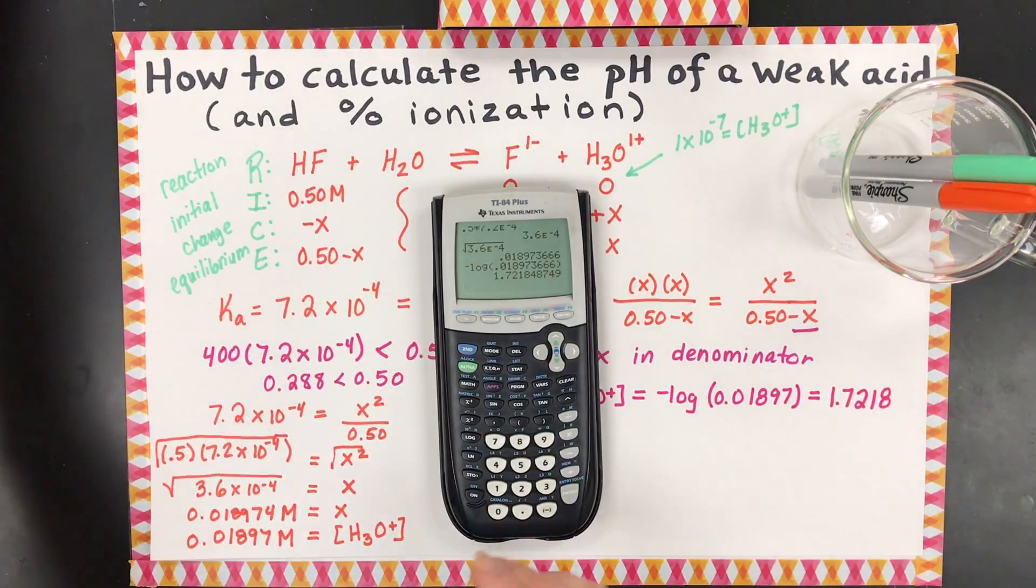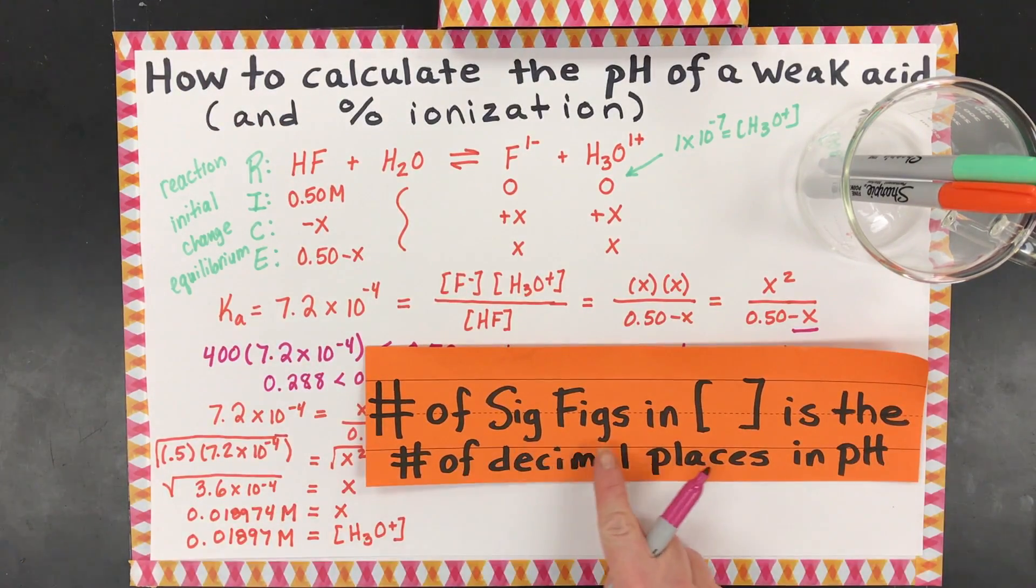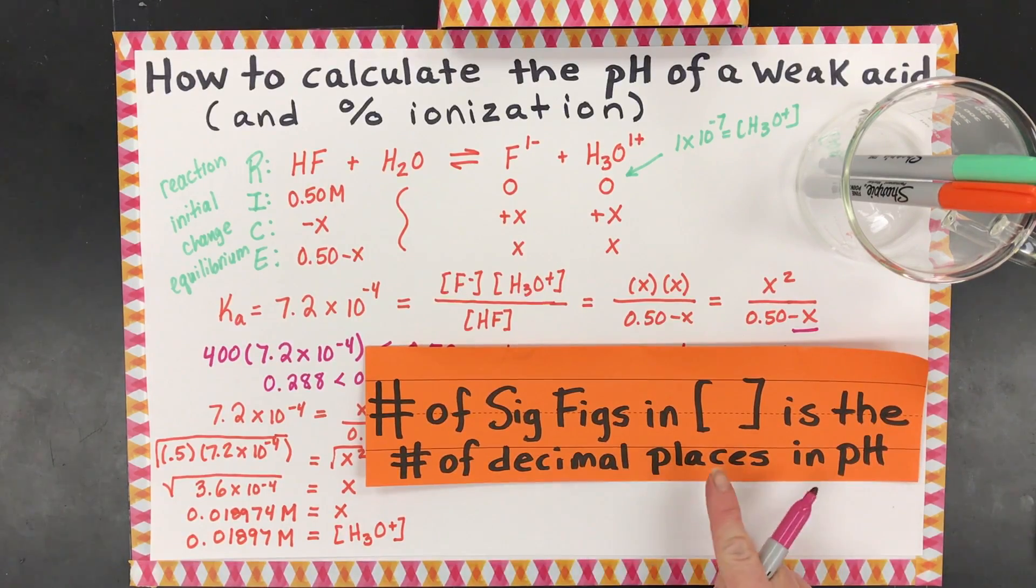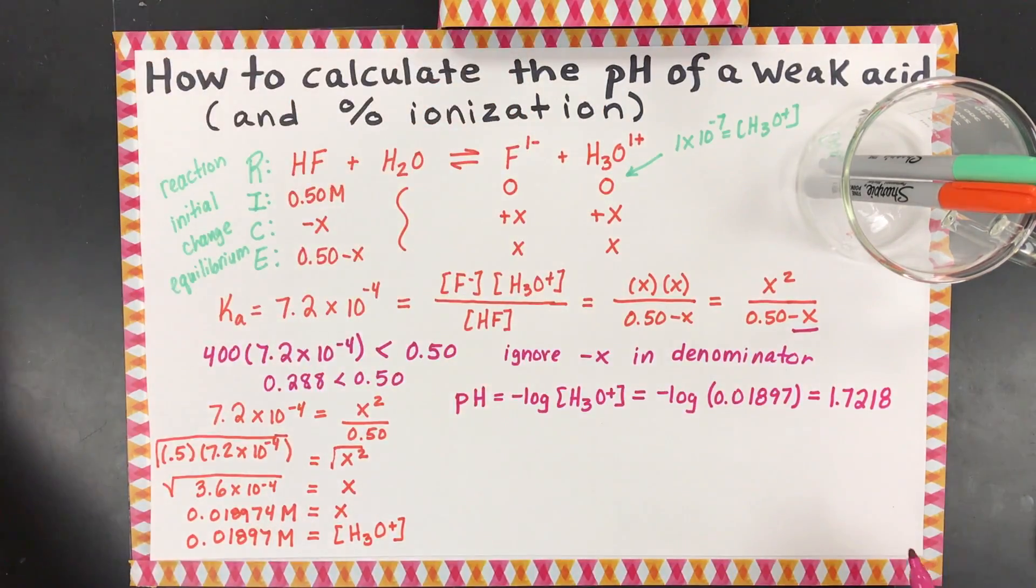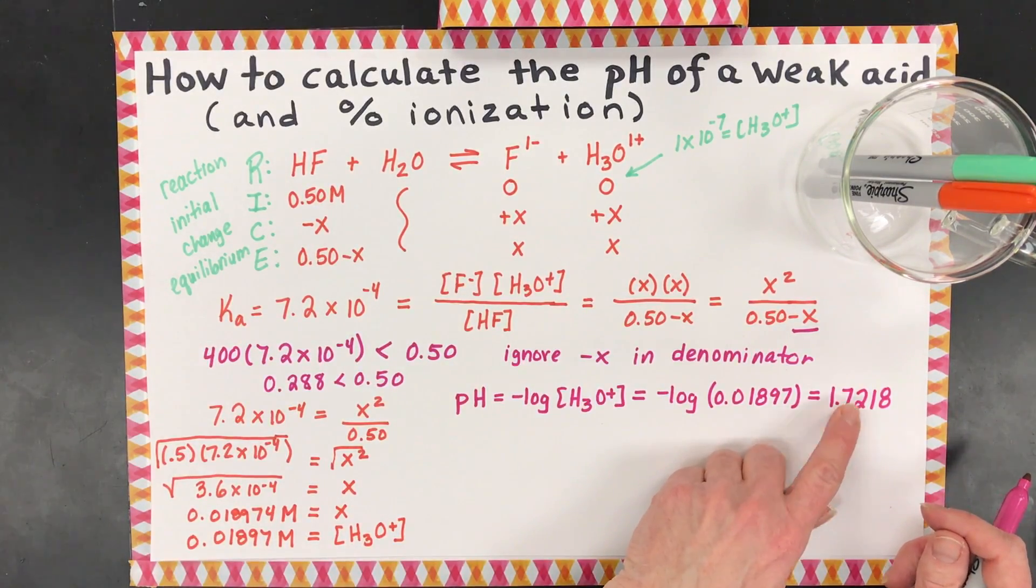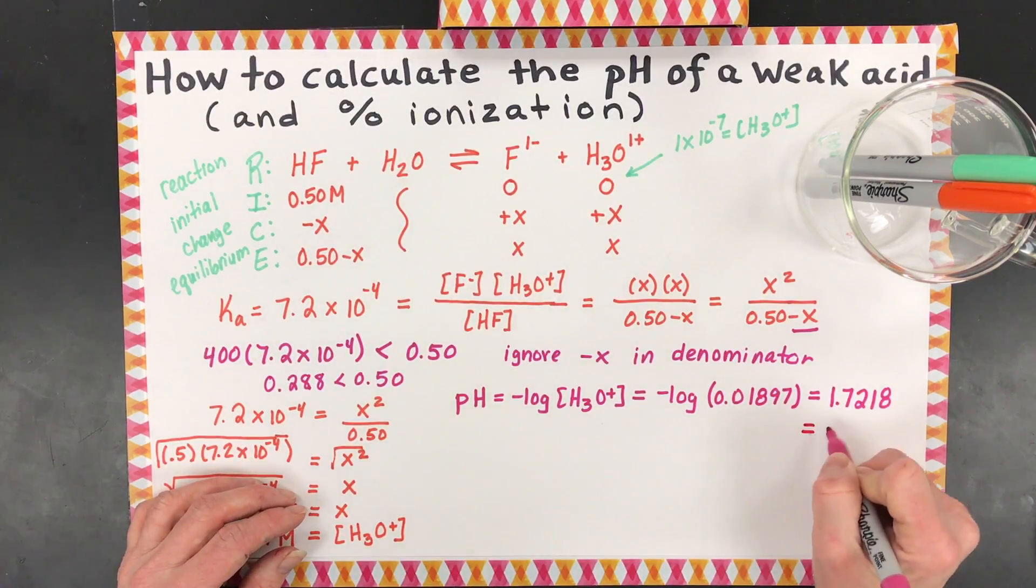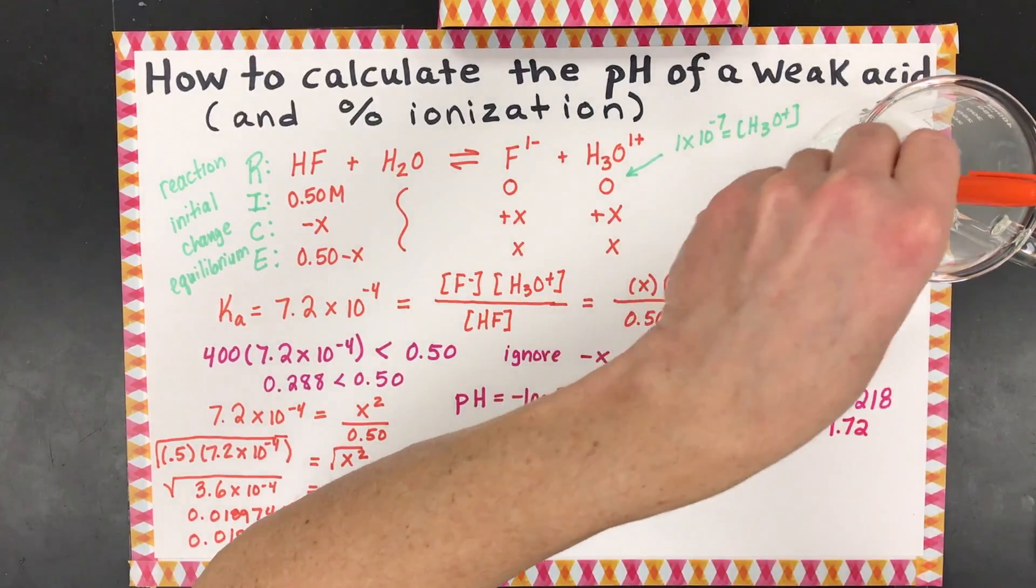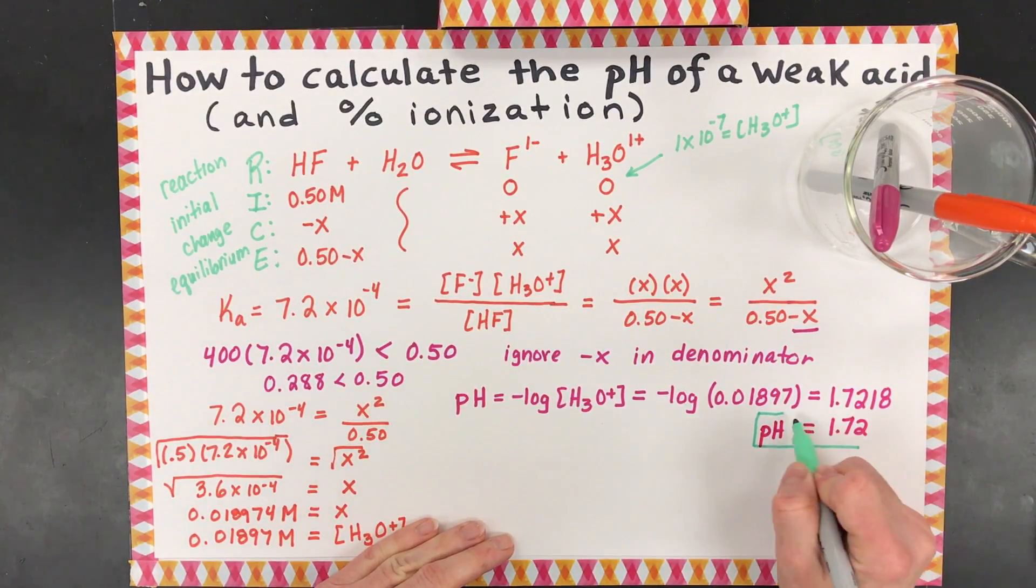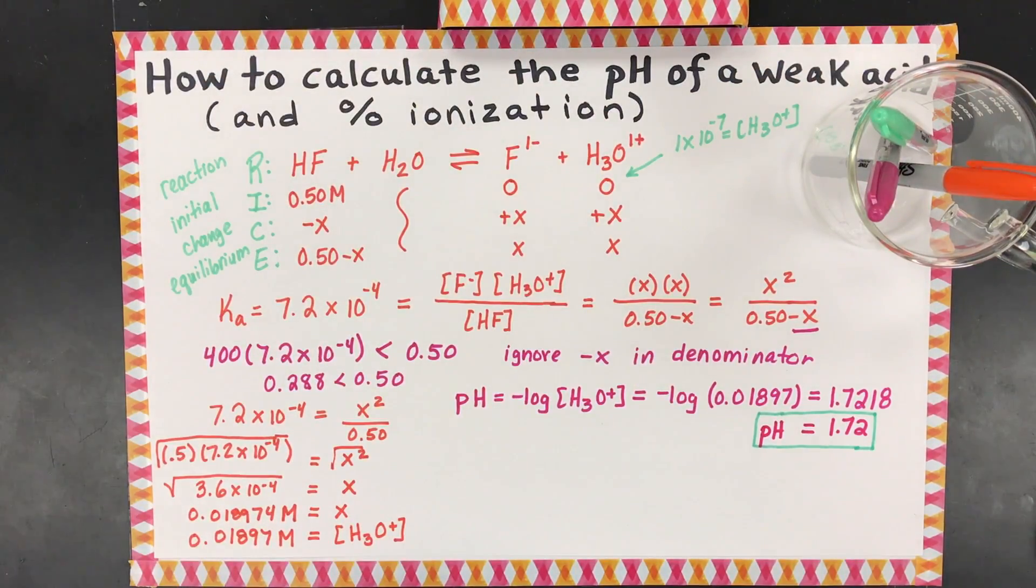Now here's some sig fig rules with pH. Maybe you didn't even know there were special rules. There are. The number of sig figs in the concentration is the number of decimal places in the pH. So what does that mean? It means that I had initial concentration with two sig figs. I can only keep two decimal places. The one is sort of taking the place of this 0.0. So what does that mean? It means I can only say that the pH is 1.72. Box your answers out seriously. Such a thing that your teachers want you to do. Little thing, you'll make them smile. Don't you want to make your teacher smile?